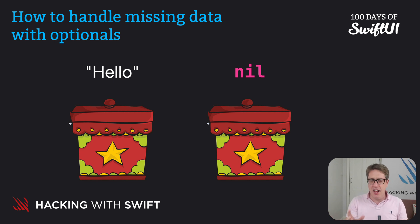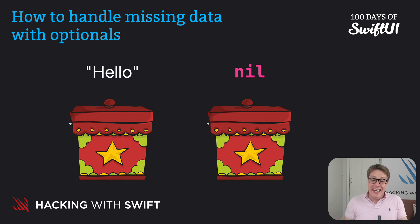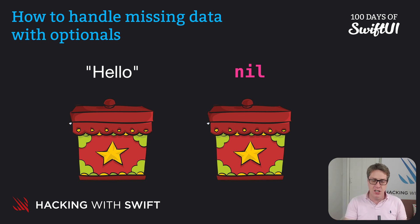Any kind of data can be optional: strings, ints, bools, doubles, enums, structs, classes, arrays. It's all potentially optional.